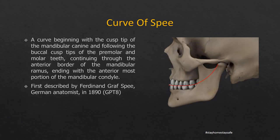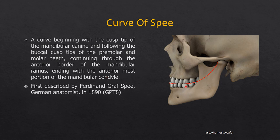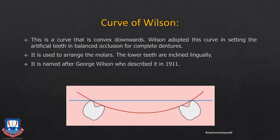The curve of Spee is an anterior compensating curve that begins with the cusp of the mandibular canine, follows the buccal cusps of the premolars and molar teeth, continues through the anterior border of the ramus of the mandible, and ends with the anteriormost portion of the mandibular condyle. Essentially the curve follows the tip or incisal edges of the occluding surface of the mandibular teeth, conforming to the surface of a sphere 8 inches in diameter with its center at the glabella. It was first described by Graf Spee in 1890, and helps in balancing the denture during protrusive movements.